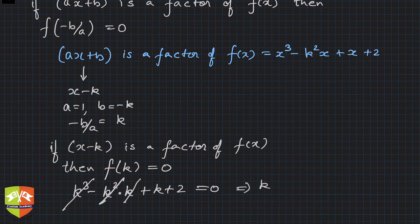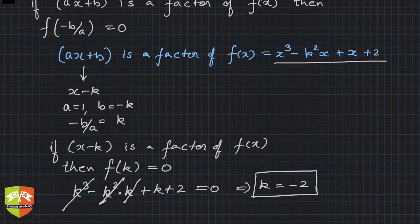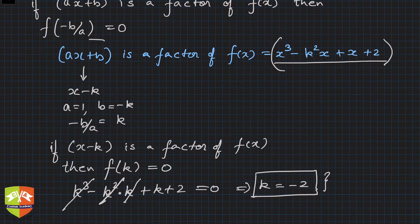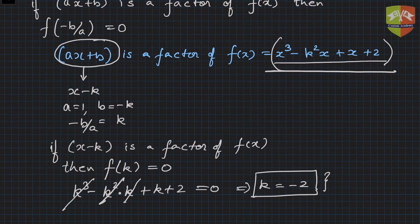Clearly k cube minus k cubed cancels, so this gives us k plus 2 equals 0, which implies k is equal to minus 2. So k must be minus 2 for this expression to be completely divisible by x minus k, i.e., for x minus k to be a factor of this polynomial.